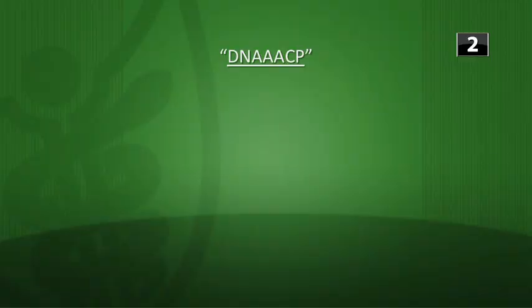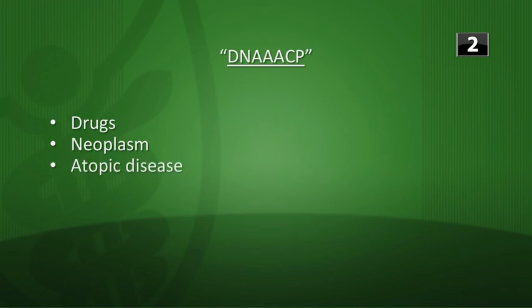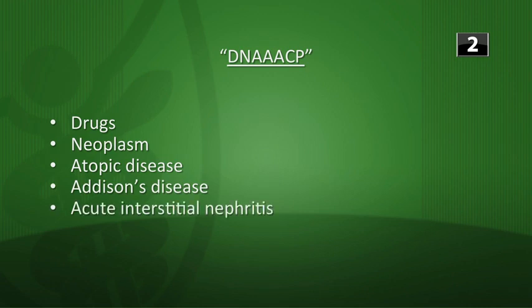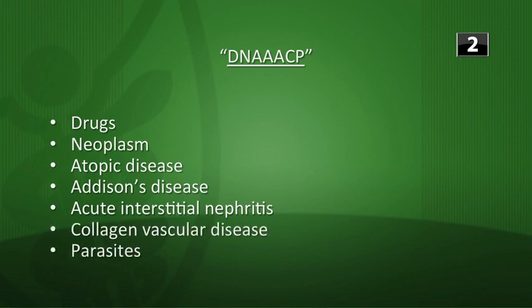What's the differential diagnosis for eosinophilia? The mnemonic is D-N-AAA-C-P. D is for drugs, N is for neoplasm. The first A is for atopic diseases like allergy, asthma, and Churg-Strauss disease. The second A is for Addison's disease or primary adrenal insufficiency. The third A is for acute interstitial nephritis. C is for collagen vascular diseases. P is for parasites, such as Loeffler's eosinophilic pneumonitis from helminthic infections like Ascaris, Strongyloides, and various hookworms.